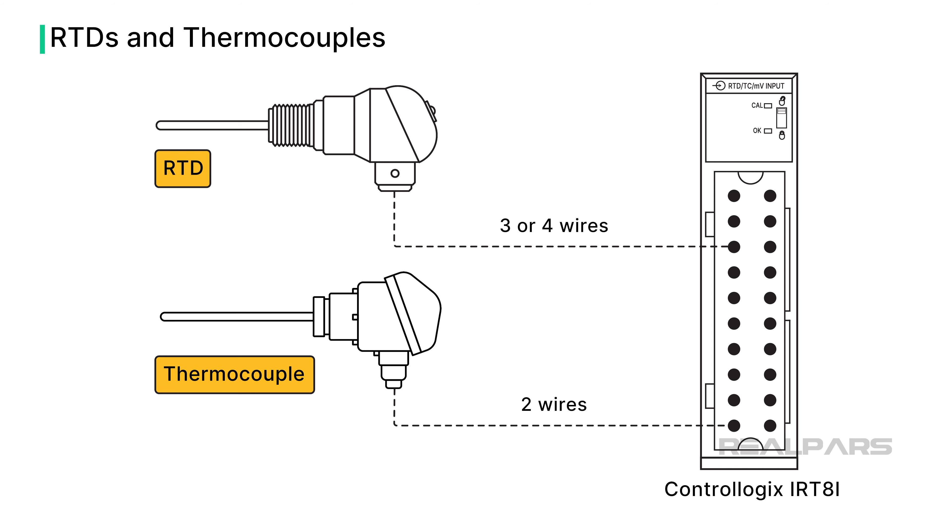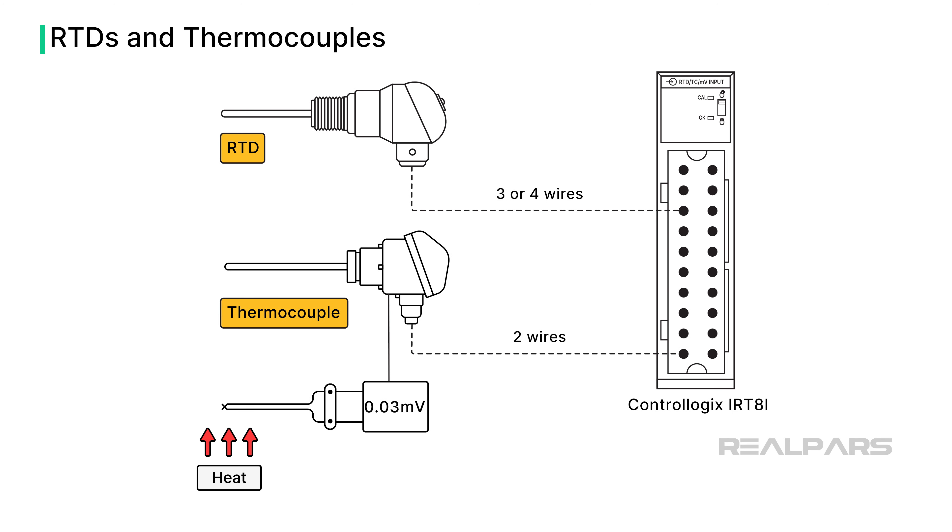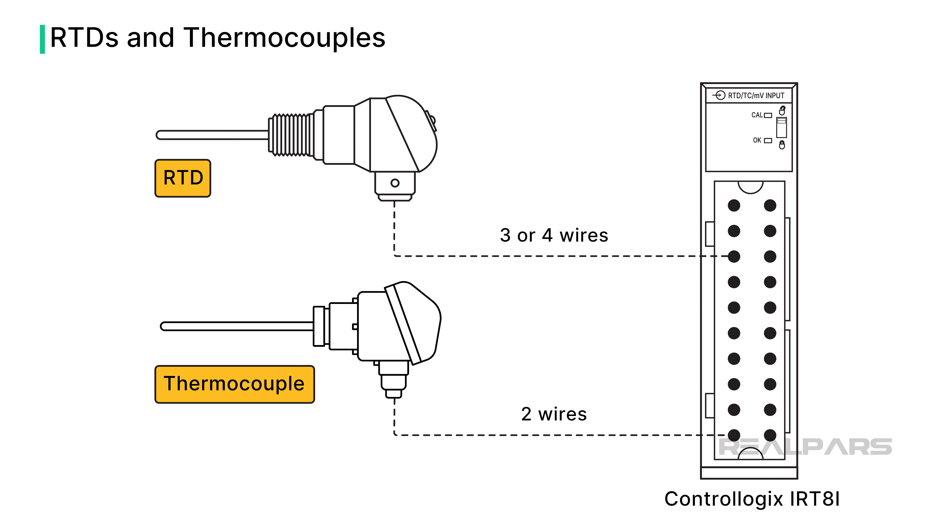This type of connection has pros and cons. The RTD changes resistance with a temperature change, and a thermocouple produces a change in voltage with a temperature change. Issues with wire length between the RTD and the module, and differing temperatures between the thermocouple sensing location and the module, need attention.